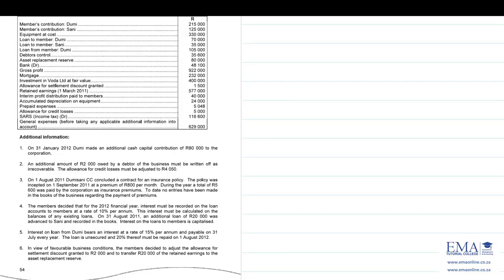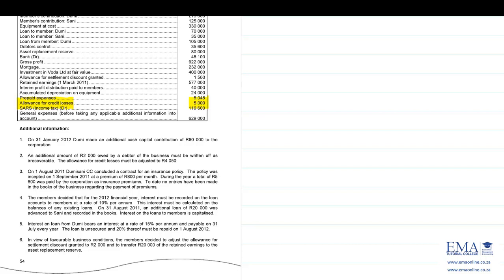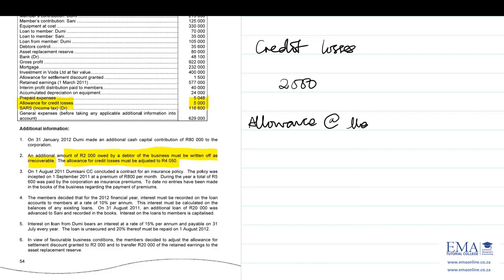Now the second scenario: the allowance for credit losses decreased. The allowance for credit losses in the trial balance was initially 5,000. Under additional information, an additional amount of 2,000 owed by a debtor must be written off as irrecoverable — so credit losses already include 2,000. Then you're told the allowance for credit losses must be adjusted to 4,050.